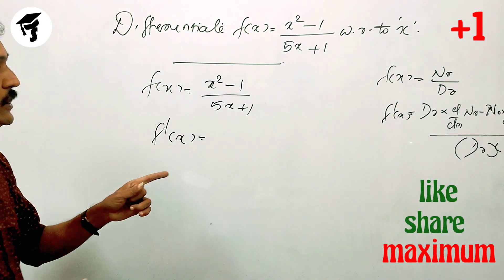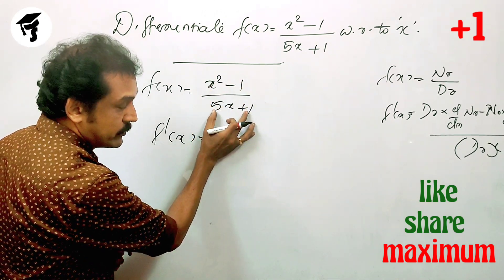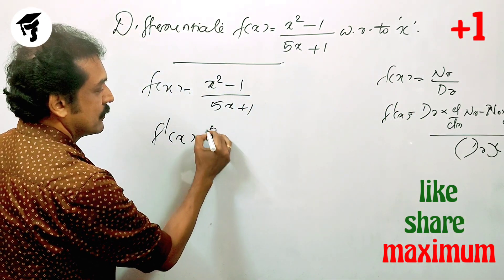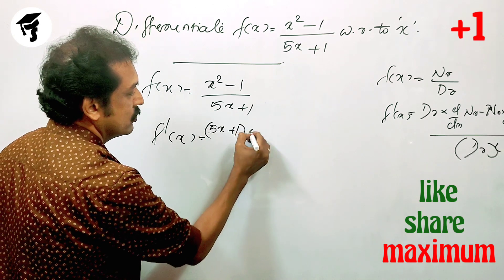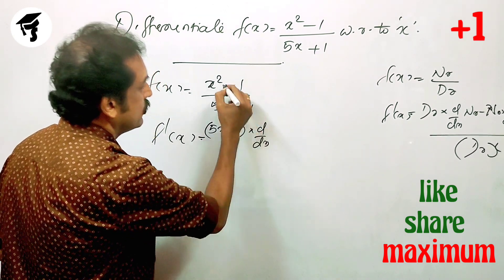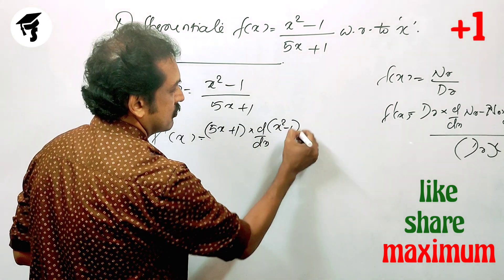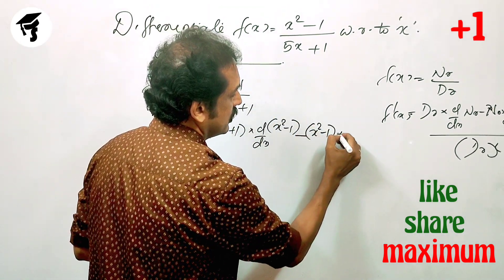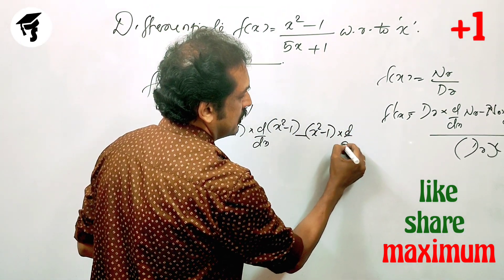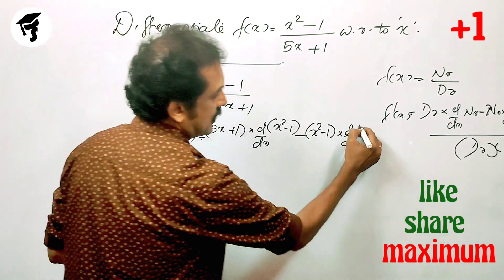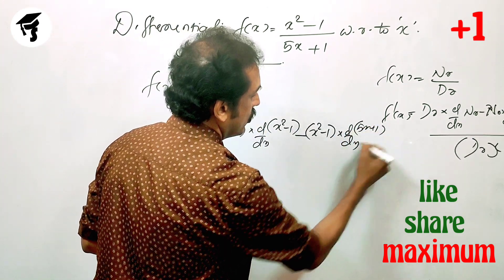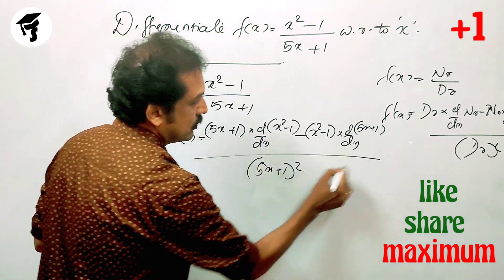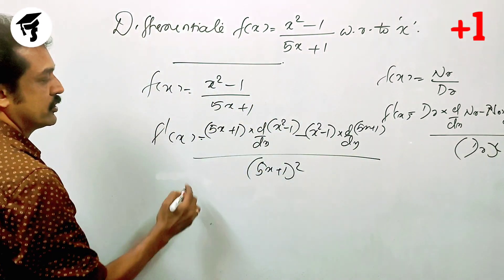This is the quotient rule. Starting from the denominator: that is 5x plus 1, into d/dx of numerator means x squared minus 1, minus numerator means x squared minus 1, into d/dx of denominator, that means 5x plus 1, whole divided by 5x plus 1 the whole square — that is the denominator squared.